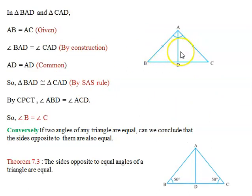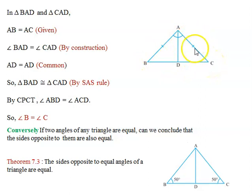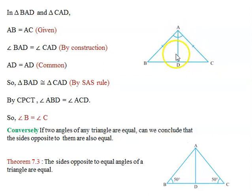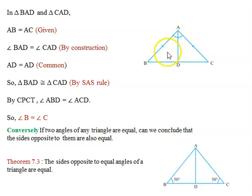After drawing the angle bisector, we can see two triangles: triangle ABD and triangle ADC. In these triangles, AB is equal to AC (given), and since AD bisects angle A, angle BAD is equal to angle CAD. Also, AD is the common side. Since side, included angle, and side are equal — by the SAS axiom — we can say that these two triangles are congruent.